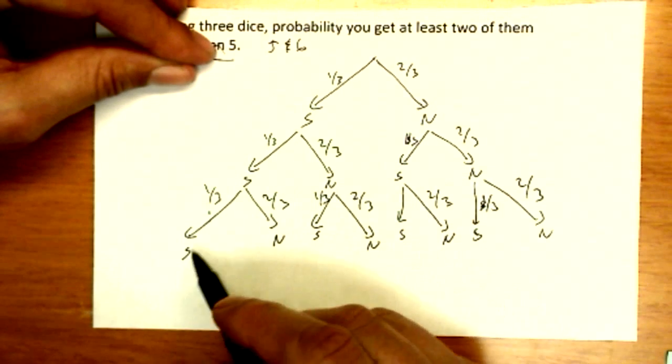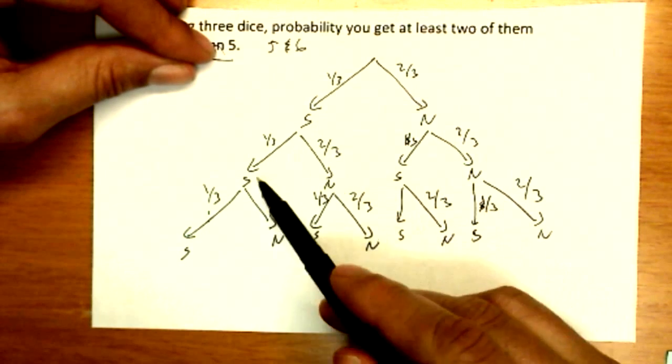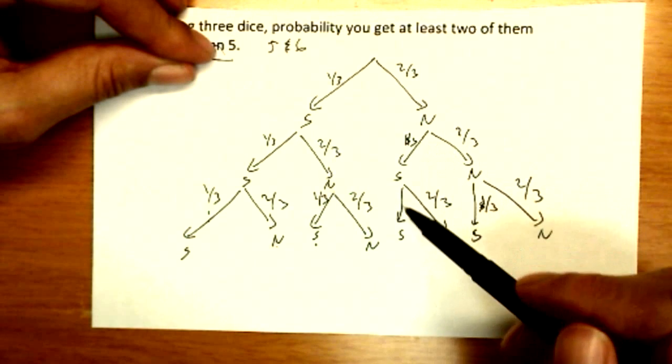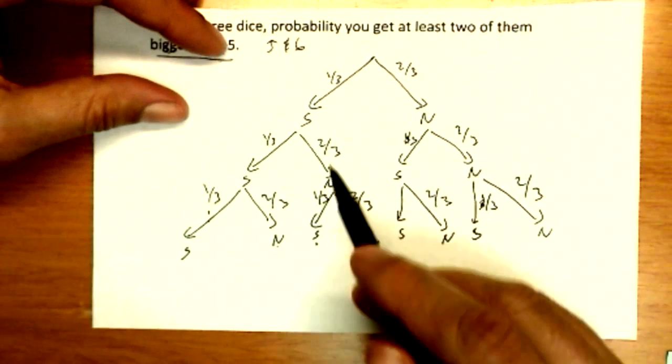So the probabilities we're interested in are going to be success, success, success. That's three, that's certainly more than two. Here we've got two. Success, no success there, and no success. So the same ones that worked for the two heads on the two coins or two tails, whatever we were doing.